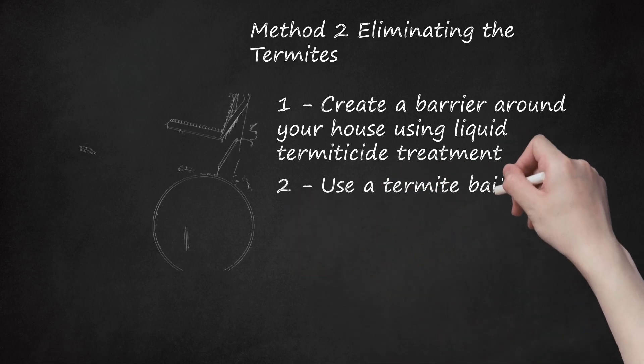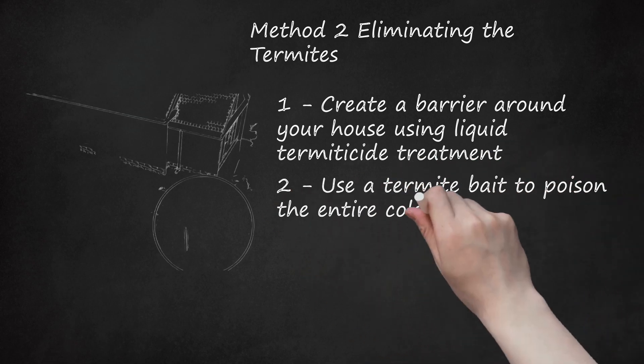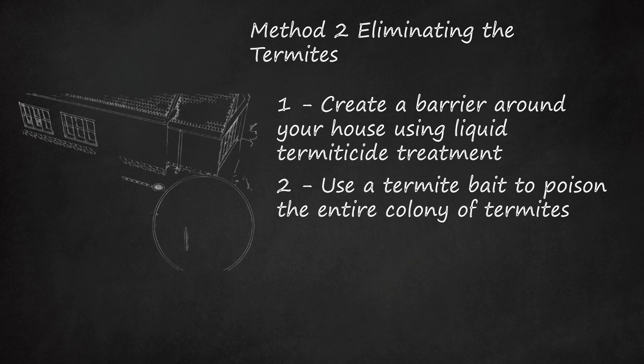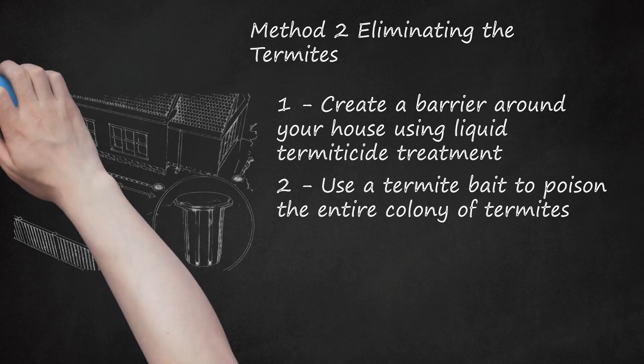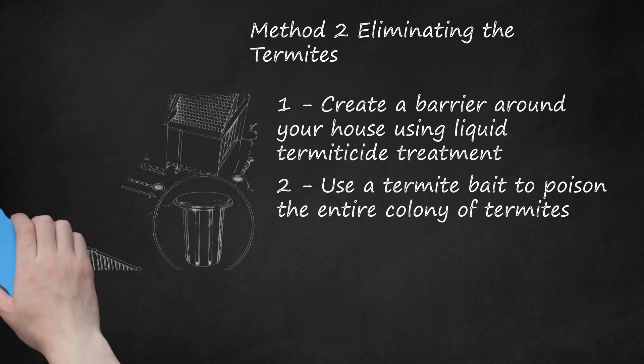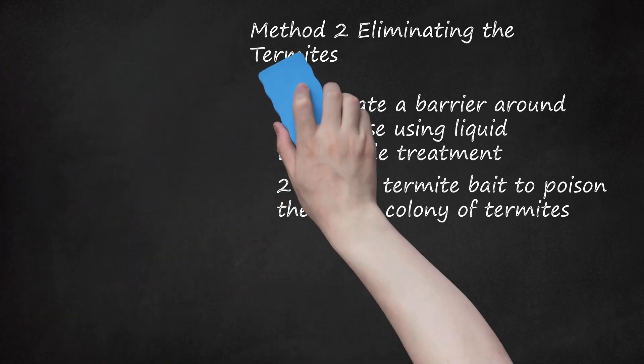Step 2: Use a termite bait to poison the entire colony of termites. Termite bait is a poison that slowly acts to kill termites. It also spreads the poison around the colony to eradicate the infestation. Place the baits in a perimeter around your house, each bait being 10 to 12 feet apart. Add additional baits in areas where there is high termite activity. Termite baits are made of cardboard, paper, or other cellulose material, with a lethal poison for termites. You can use either above or below ground baits.